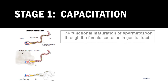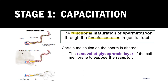Capacitation is actually a process to enable functional maturation of spermatozoa through the female secretions in the reproductive tract. Although sperm may be structurally mature, functionally they require stimulation or assistance from female secretions. During capacitation, several molecules undergo changes. First, there is the removal of the glycoprotein layer of the cell membrane to expose the receptor at the sperm head.